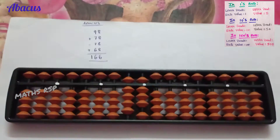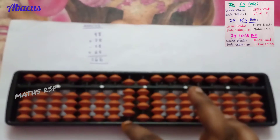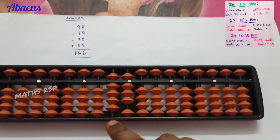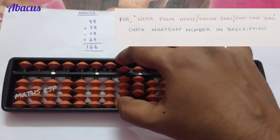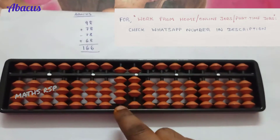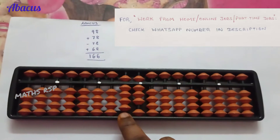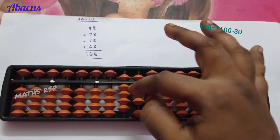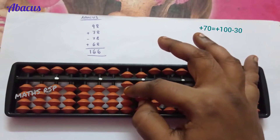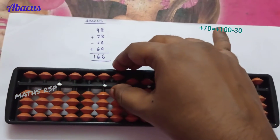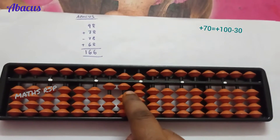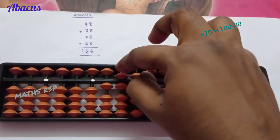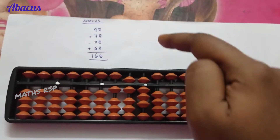Next, the second row is 78 — we need to add seven beads in the ten's strot and eight beads in the one's strot. In the ten's strot all beads are already added, so we cannot move further. We need to apply the big friend formula. Seven's big friend is three, so remove three beads in the ten's strot and add one bead in the hundred's strot. That is plus 100 minus 30 equals 70 — seven in the ten's strot means 70 is added.